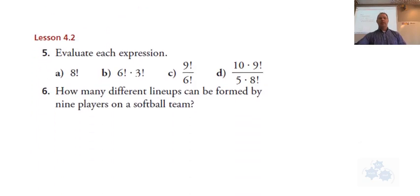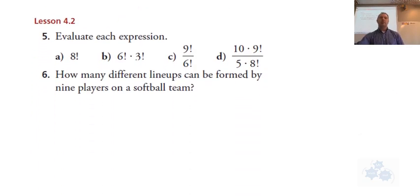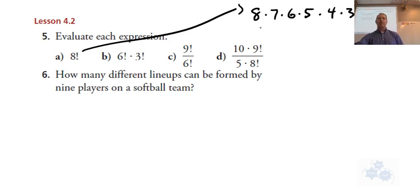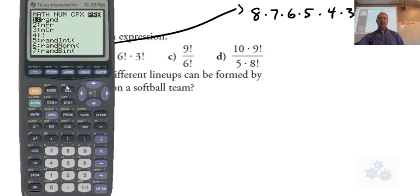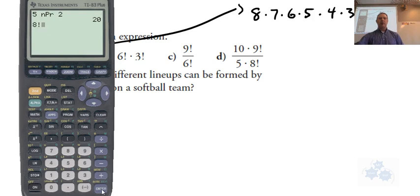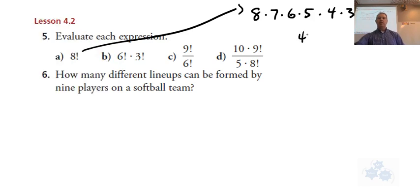From 4.2, this is where we talked about factorial. 8 factorial is actually this right here, multiplying by all the numbers that are one less. Until you get to one, boom, then you stop. So 8 factorial, you could do this on your calculator. You have a factorial button somewhere, probably a second function, and you could do 8 and then just go to that function there. 8 factorial, and that's 40,320. How many different lineups can be made, formed by nine players on a softball team? That would be 9 factorial.